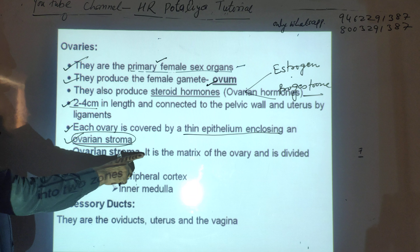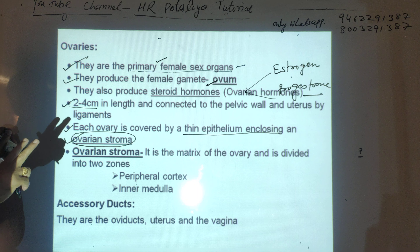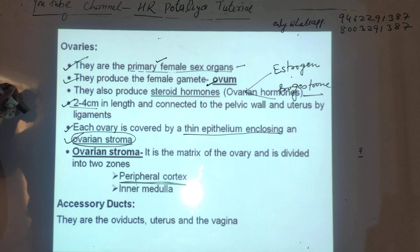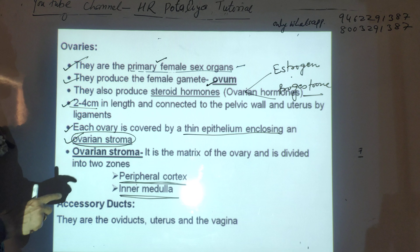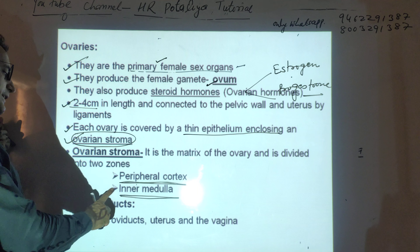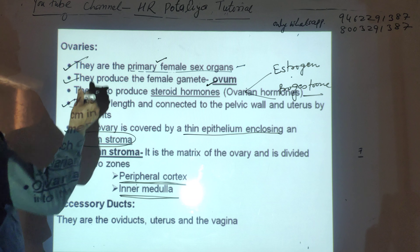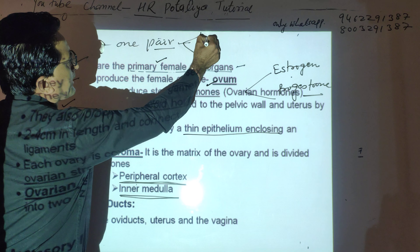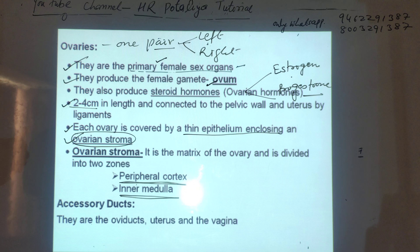The ovarian stroma is the matrix or surrounding part of the ovary, divided into two zones: the peripheral cortex, which is the outer surrounding layer, and the inner medulla. The ovary is one pair — one on the left side and one on the right side. Now we will discuss the accessory ducts.